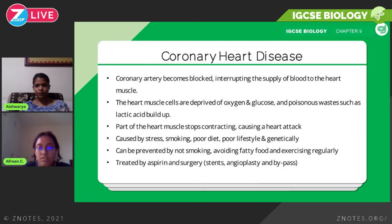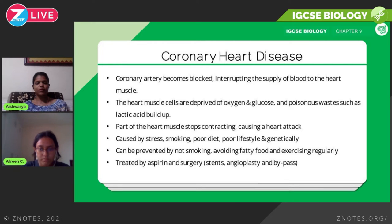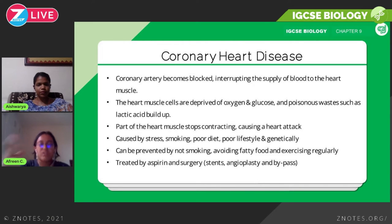Heart diseases are known as coronary heart diseases. Coronary arteries supply oxygen to the heart muscles, and they can become blocked due to excess dietary oils, poor lifestyle, stress, smoking, or genetics. When blocked, blood supply to the heart muscles is cut off; the muscles are deprived of oxygen and glucose, poisonous waste such as lactic acid and carbon dioxide builds up, part of the heart muscle stops contracting, and a heart attack occurs. Prevention includes not smoking, avoiding fatty foods, and exercising regularly.